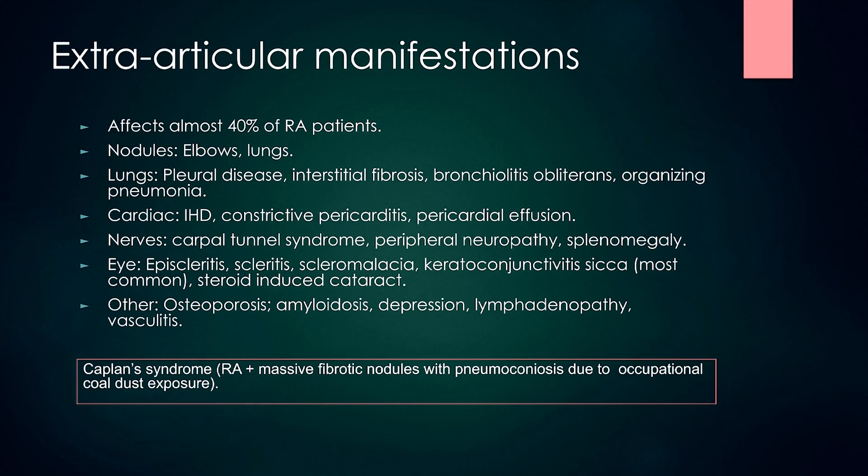Caplan syndrome is also associated with rheumatoid arthritis. It means RA plus massive fibrotic nodules with pneumoconiosis due to occupational coal dust exposure — it happens to people who are exposed to coal dust.